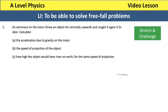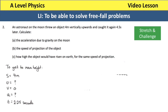Final question. An astronaut on the Moon threw an object 4 metres vertically upwards and caught it again 4.5 seconds later. This time A will not be 9.81 because we are on the Moon and we don't know the acceleration due to gravity there. I lay out SUVAT again: S is 4 metres upwards, and I consider the time to get to maximum height. The acceleration is negative when moving upwards and positive coming down. At maximum height the speed is 0, and since the total time is 4.5 seconds, the time to reach maximum height is 2.25 seconds.